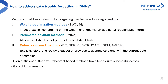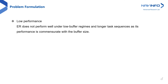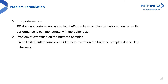Given sufficient buffer size, rehearsal-based methods have been quite successful. However, having a large buffer is not always feasible and can be quite expensive. The performance of ER is commensurate with the buffer size. When the buffer is small, the performance is relatively low, essentially due to the data imbalance problem. ER overfits on the buffer samples and is biased towards the recent task samples.